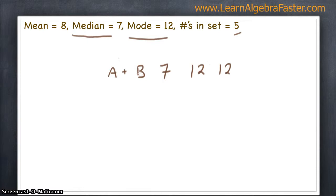A and B have to be less than seven, and they have to give us a mean of eight. So let's shoot for that. And remember, the mean is the average, so to find the mean, we actually add all the numbers together, and we'll divide by how many numbers there are. In this case, it's five.